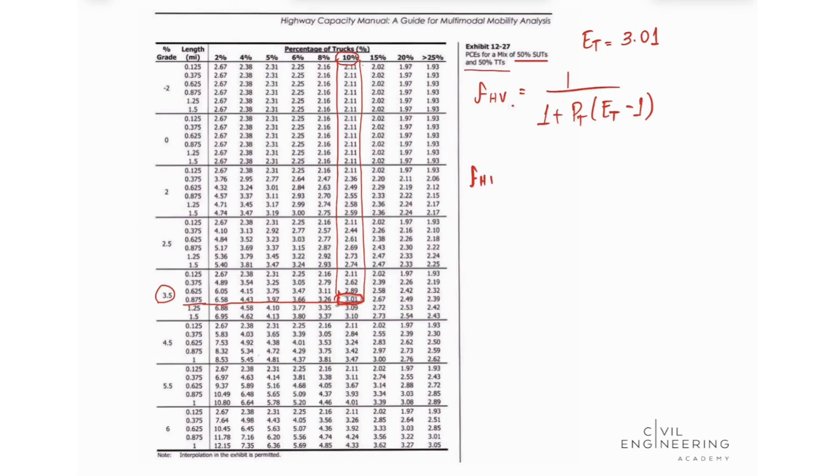So we're going to see that our adjustment factor for heavy vehicles is equal to 1 divided by 1 plus 0.1 times 3.01 minus 1. We're going to find out that our adjustment factor for heavy vehicles is equal to 0.83.